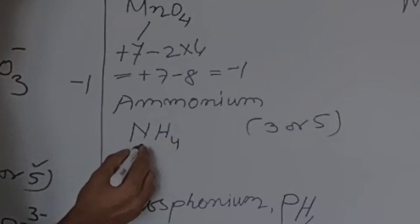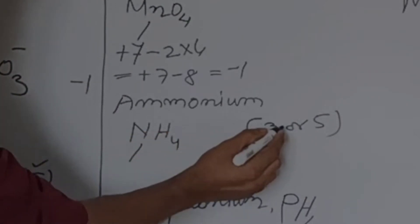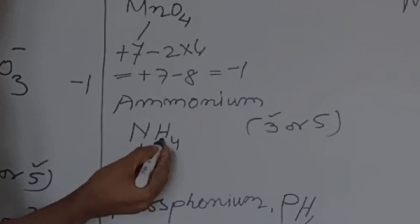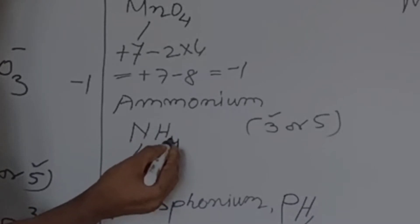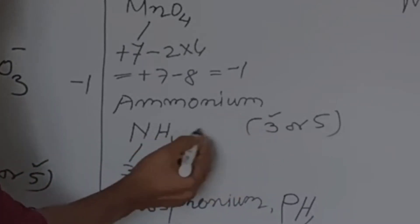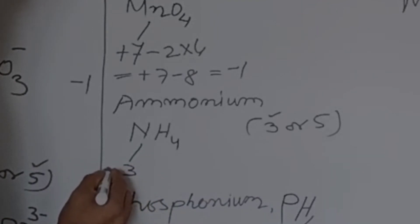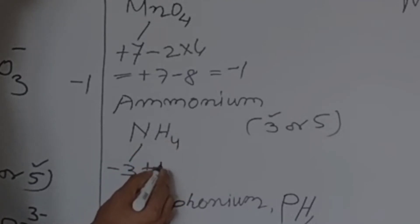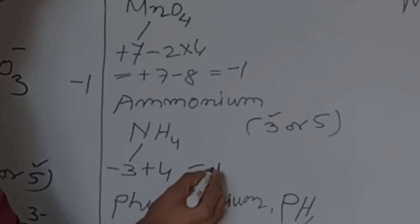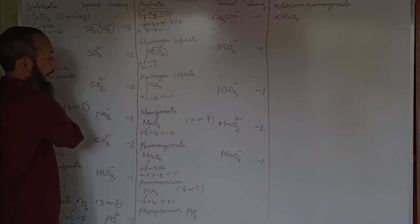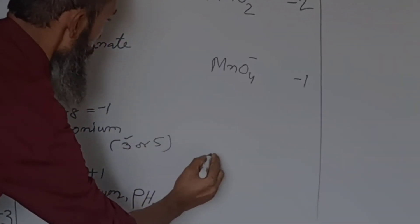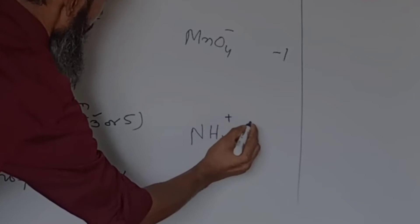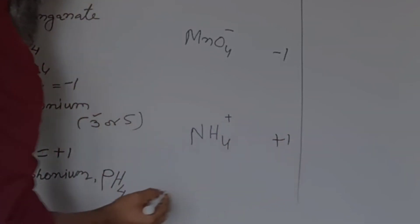Now let's see ammonium. Valency of nitrogen can be 3 or 5. Here we select valency of nitrogen as 3, because when there is a presence of electropositive character we take the smallest valency. Nitrogen is electronegative, hydrogen is electropositive with valency 1. Four hydrogen atoms give plus 4 minus 3, valency becomes plus 1. It is a cation. Symbol is NH4 1-plus.